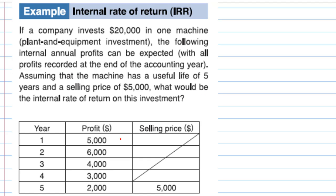We are given: profit at the end of the first year is $5,000; profit at the end of the second year is $6,000; profit at the end of the third year is $4,000; profit at the end of the fourth year is $3,000; and profit at the end of the fifth year is $2,000 plus the selling price of $5,000, totaling $7,000.